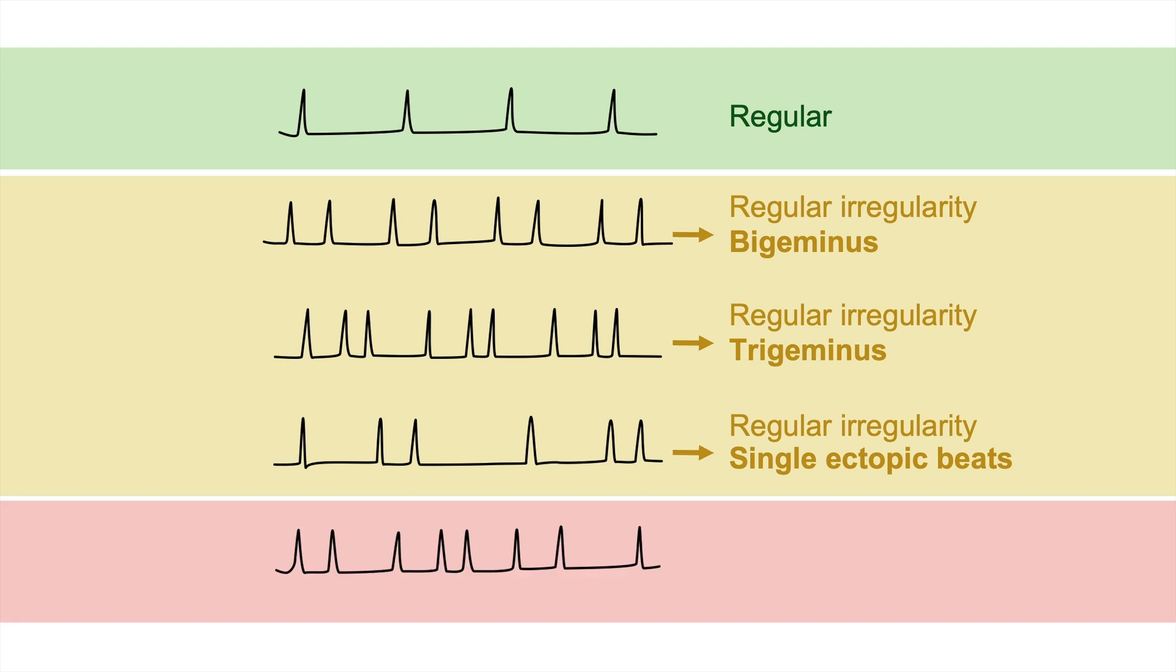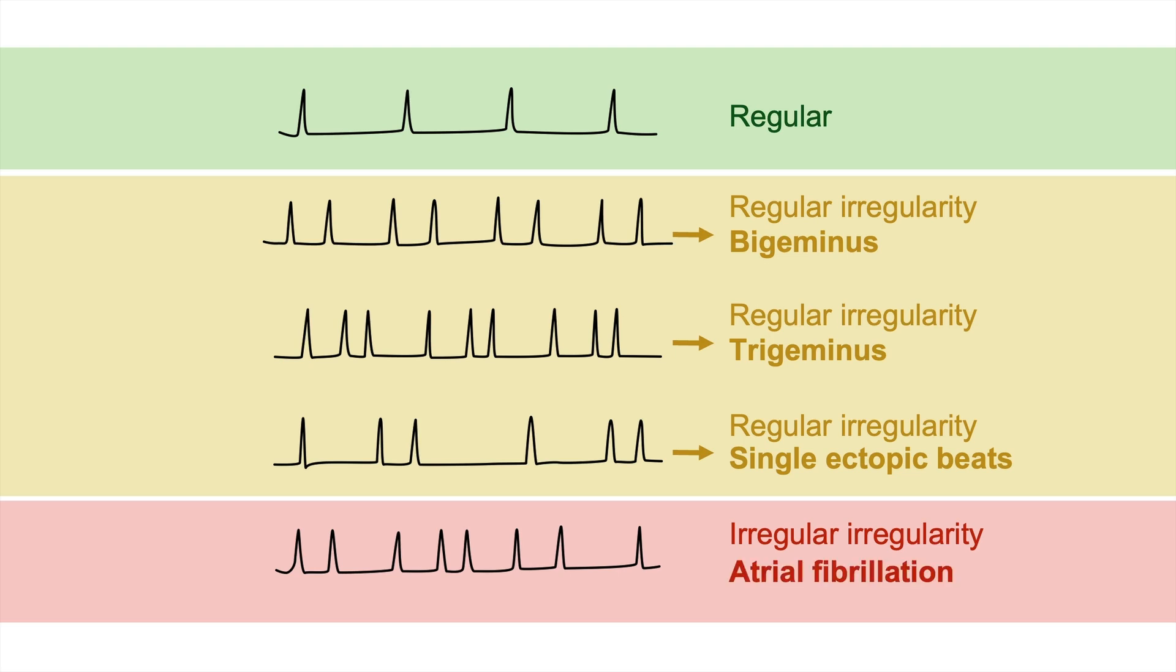Now let's check out another type of irregularity. Since there's no regularity to this ECG at all, we call it an irregular irregularity. And we're going to cover this type of rhythm abnormality in depth later on. I can tell you that much. This is usually atrial fibrillation.